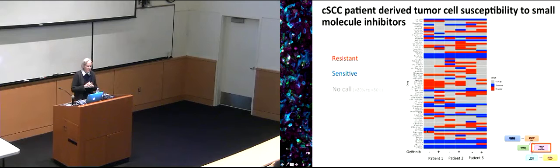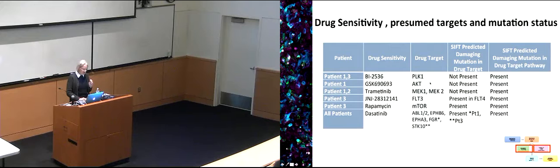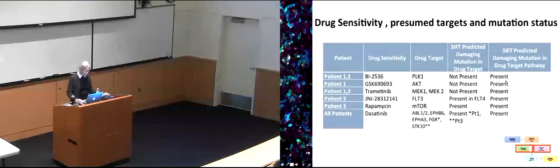Some drugs showed sensitivity where we don't see a mutation in the presumed drug target, but we do see damaging mutations — as predicted by several algorithms — in the pathway. This underscores the importance of looking at pathway context rather than individual genes alone. The HitWalker software allows feeding in various omics data types as well as functional data to prioritize pathways and genes across patients.